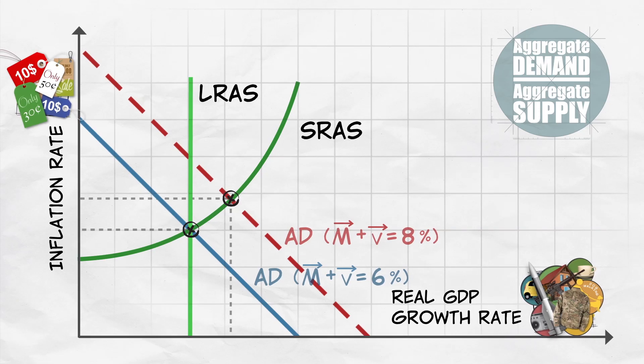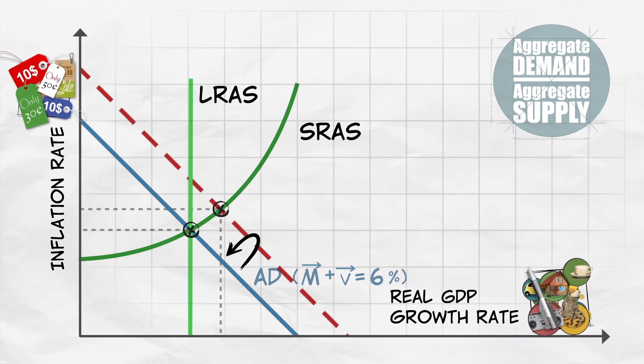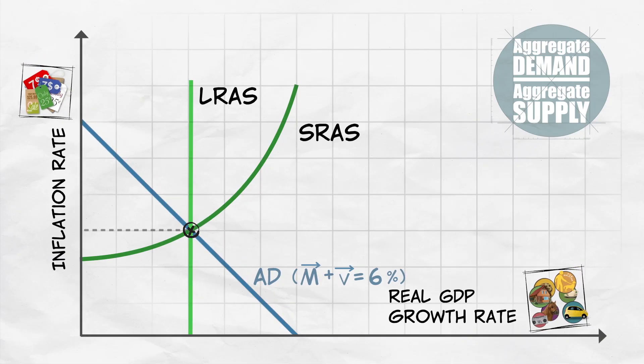That's the short run. Now what happens in the long run? Well, in the long run, government spending growth has to return to normal. Government can't keep growing spending at a higher rate forever, because in the long run, government spending can't grow faster than the economy grows. So in the long run, the aggregate demand curve shifts back as the growth rate of government spending returns to normal. After the boost in spending works its way through the economy, we return to point A.